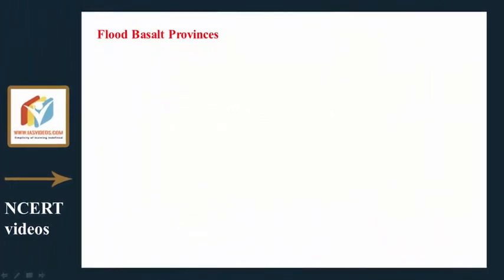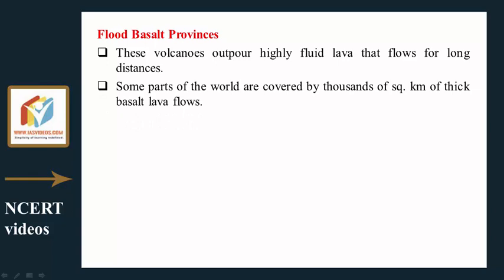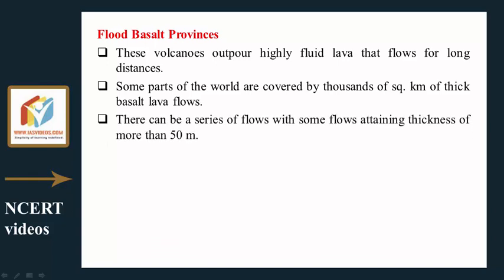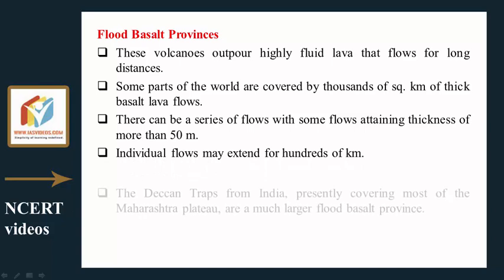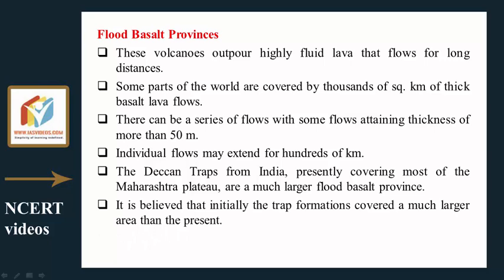Flood basalt provinces: These volcanoes outpour highly fluid lava that flows for long distances. Some parts of the world are covered by thousands of square kilometers of thick basalt lava flows, with some flows attaining thickness of more than 50 meters. Individual flows may extend for hundreds of kilometers. The Deccan Traps from India, presently covering most of the Maharashtra plateau, are a much larger flood basalt province; it is believed that initially the trap formations covered a much larger area than the present.